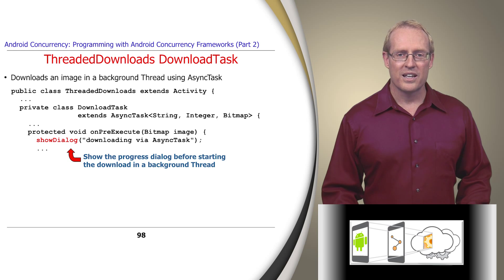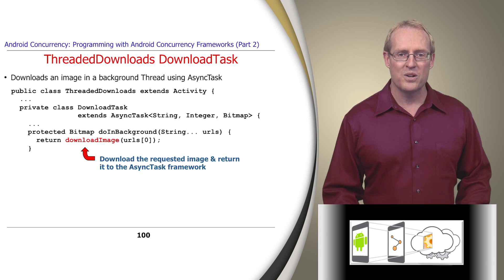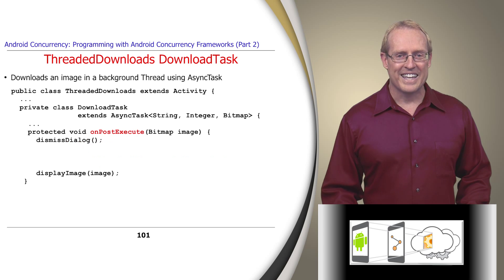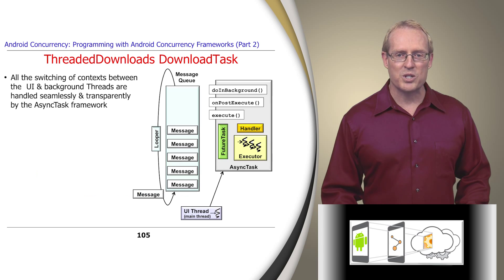When OnPreExecute returns, the framework invokes the DoInBackground hook method in the context of a background thread. DoInBackground forwards the URL passed originally to execute to the DownloadImage method, which retrieves the requested image and returns it to the framework. Finally, if all goes well, the framework invokes the OnPostExecute hook method in the context of the user interface thread, passing the downloaded image as a parameter. OnPostExecute dismisses the progress dialog and displays the image to the user. All the switching of context between the user interface and background threads is handled seamlessly and transparently by the AsyncTask framework.